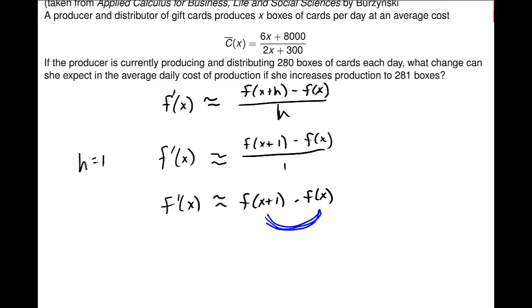280. So this is maybe f of 280, and what happens when I get f of 281? What is the difference in that cost, right, for this particular cost function?